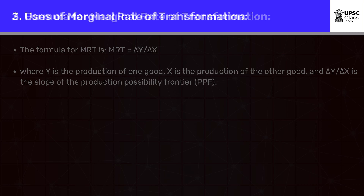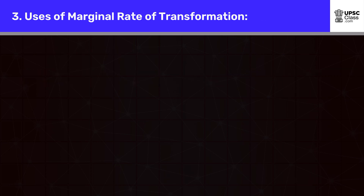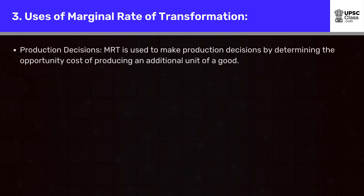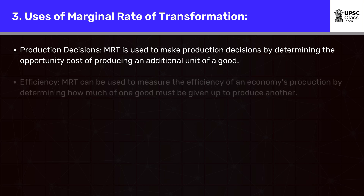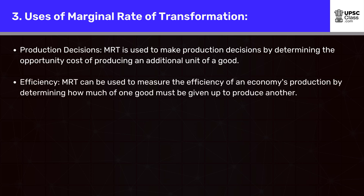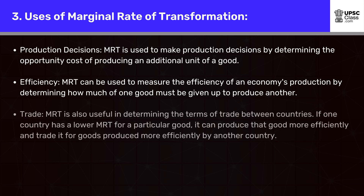MRT has several uses. For production decisions, MRT is used to determine the opportunity cost of producing an additional unit of a good. For efficiency, MRT can be used to measure the efficiency of an economy's production by determining how much of one good must be given up to produce another.